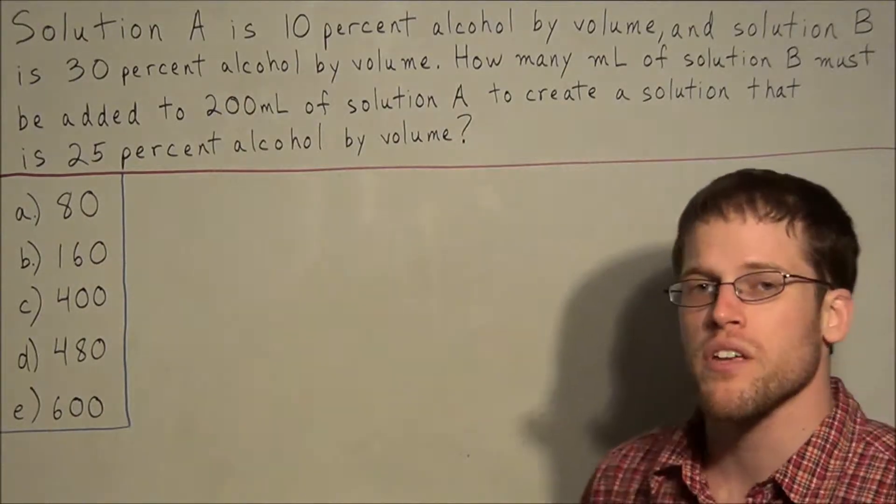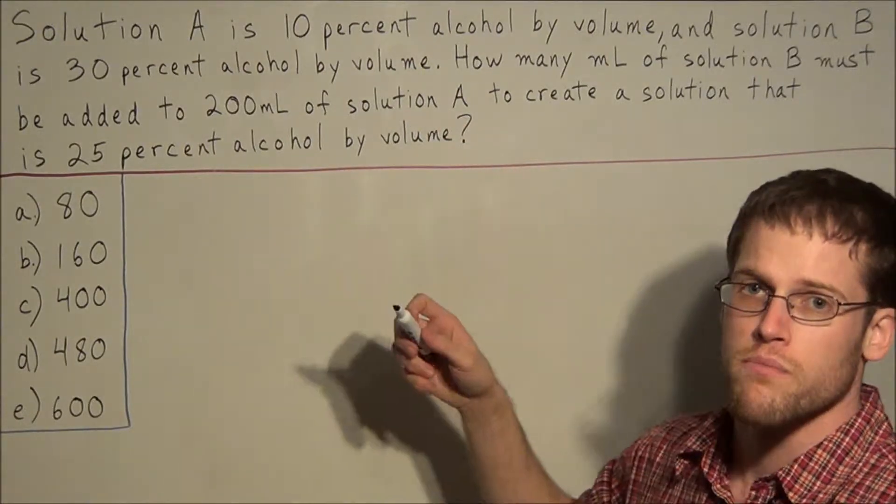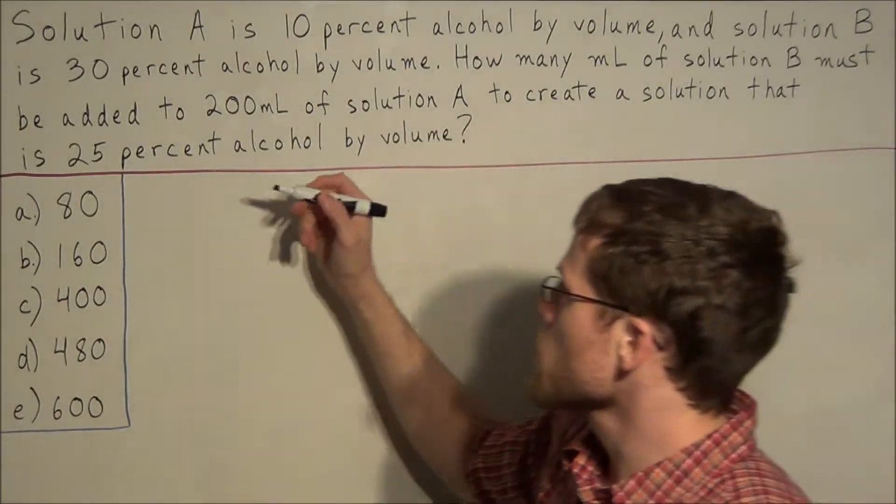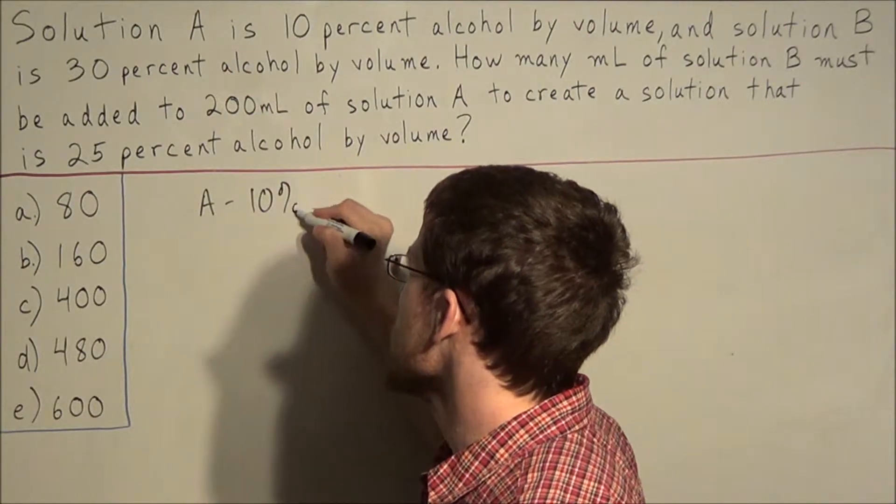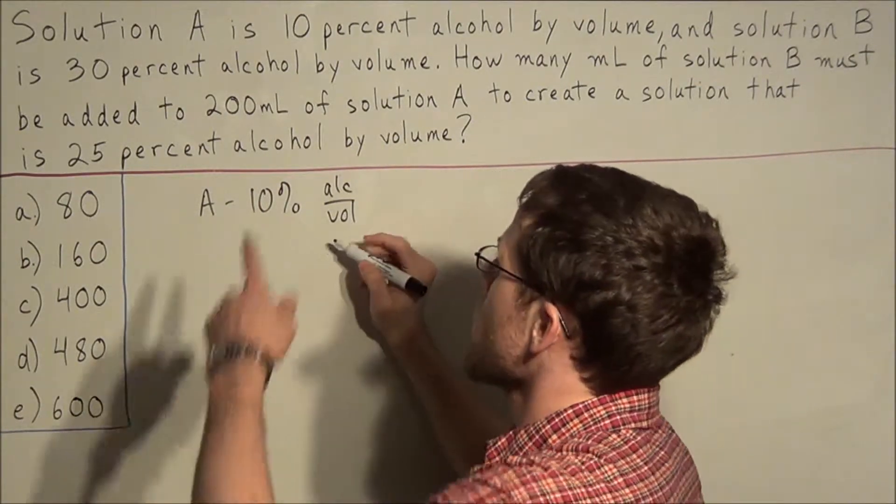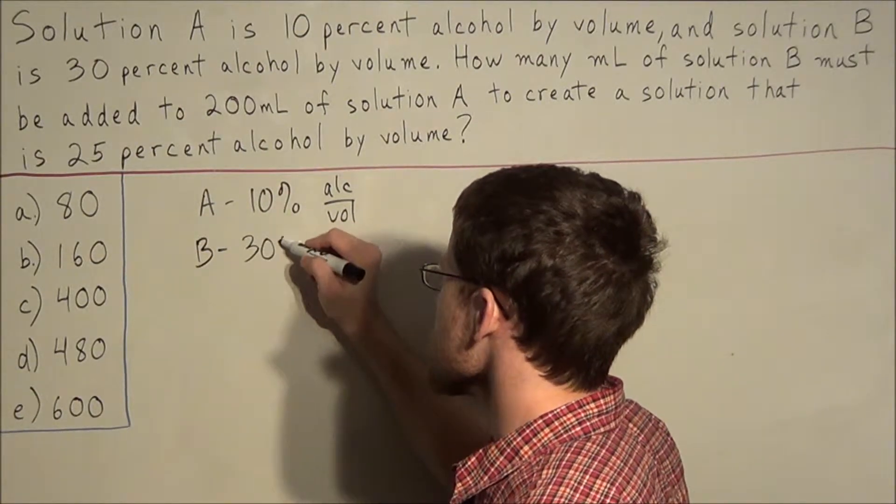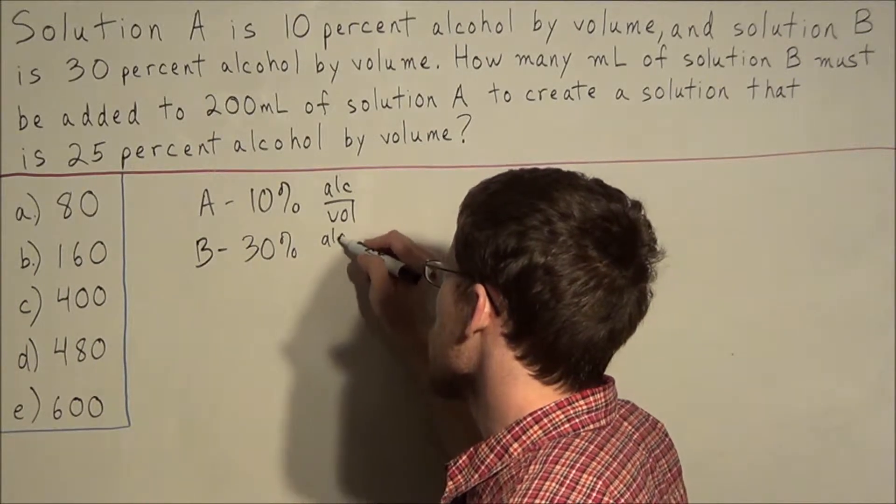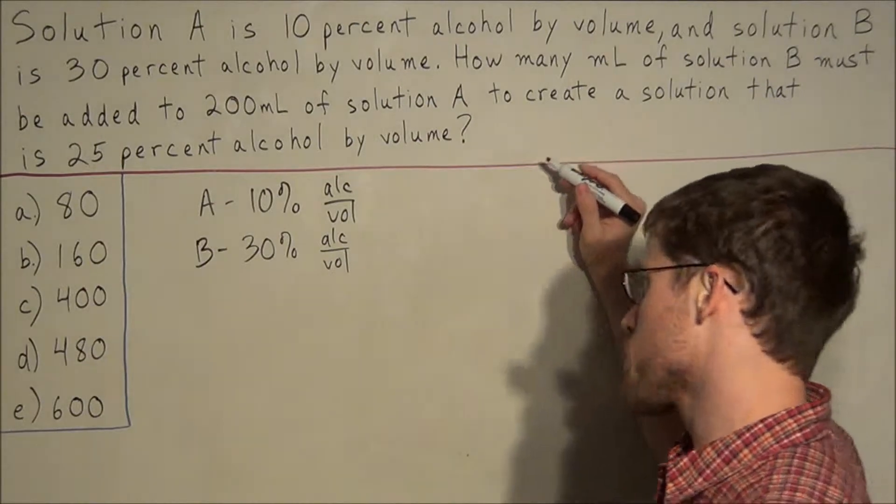One method that is pretty effective is using the answer choices to see which one satisfies the conditions of the problem. For a problem like this we would want to record that A is 10% alcohol by volume and we also know from the given information that solution B is 30% alcohol by volume. Now with this information we can create a chart of some sort.